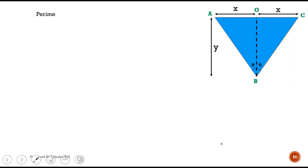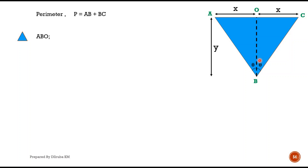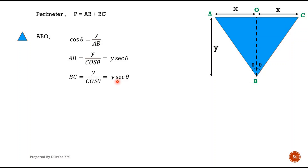Now we look at the perimeter of the channel. The perimeter is the length of sides in contact with the liquid. So perimeter P = AB + BC. Considering triangle ABO, cos θ = BO / AB, so AB = y / cos θ = y·sec θ. Similarly BC = y·sec θ. Therefore the perimeter P = AB + BC = y·sec θ + y·sec θ = 2y·sec θ.